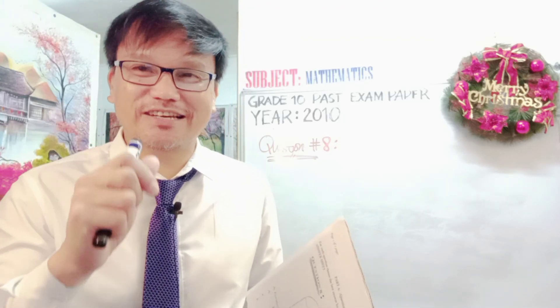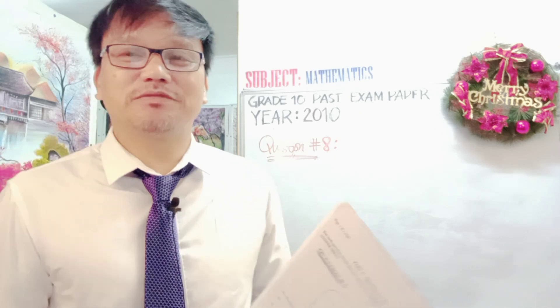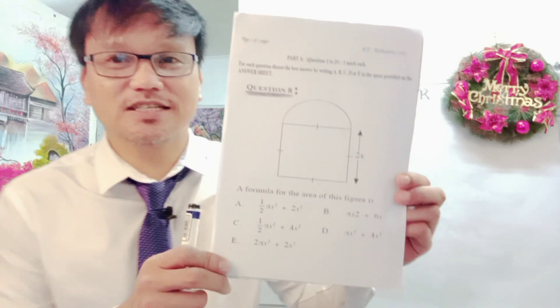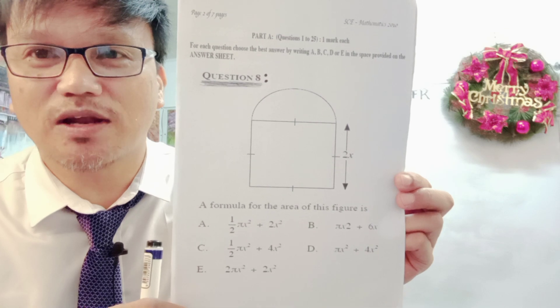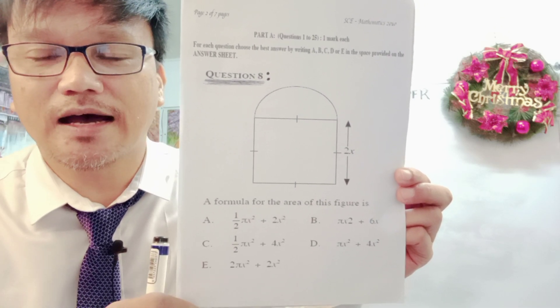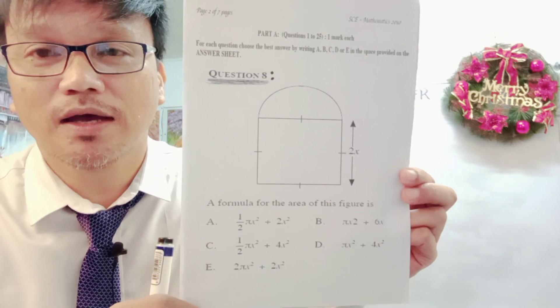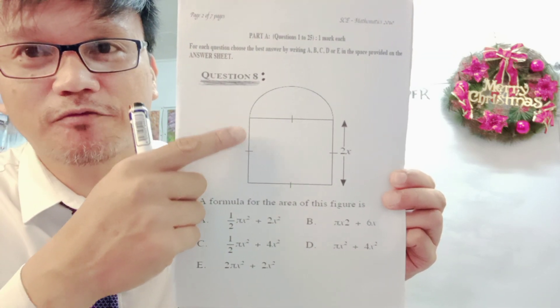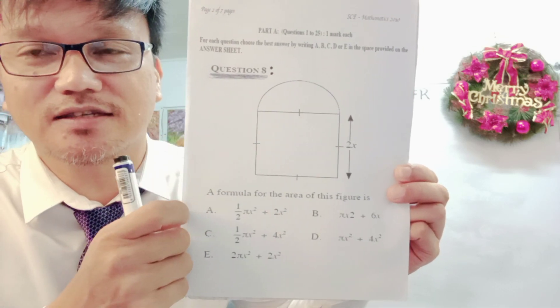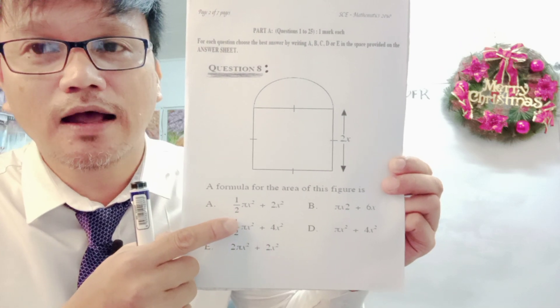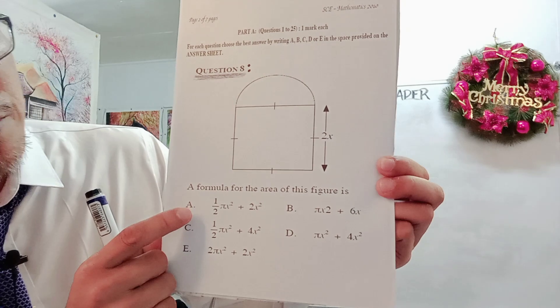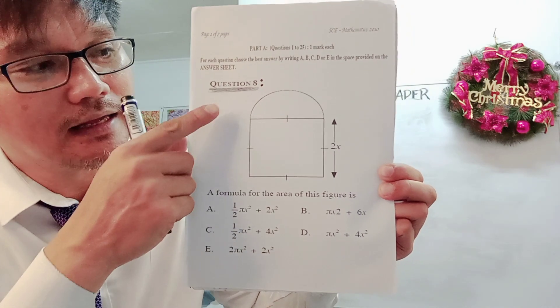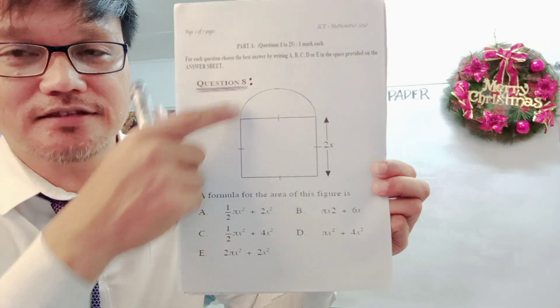Hi everyone, now let's proceed to question number 8 of the past examination mathematics for the grade 10 students year 2010. This is question number 8, all about this given diagram in which the composite shape consists of a square and a semicircle.